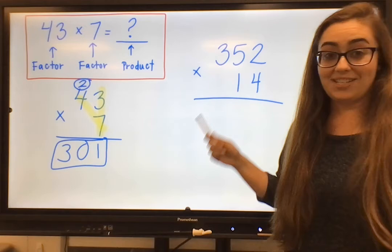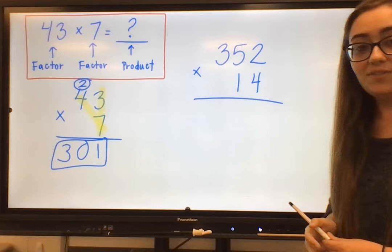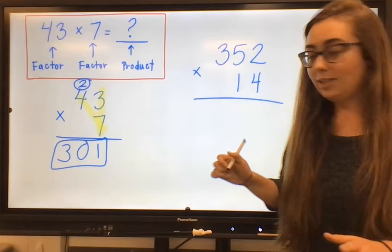Now with this problem, the one thing that is different is that it's got more digits in the factors that make it its problem. So we have 352, which is a three-digit number, and then 14 is our two-digit number.